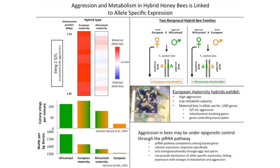In our study, we've looked at allele-specific expression — the expression of Africanized alleles versus European alleles, meaning which version of a gene is coming from which parent. We examined how much RNA is being produced off those genes in each hybrid type and how that differs between the families. We see an asymmetrically high aggression in the Africanized-maternity hybrids.